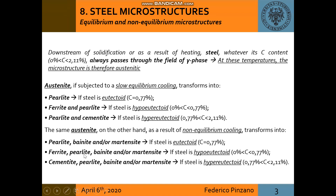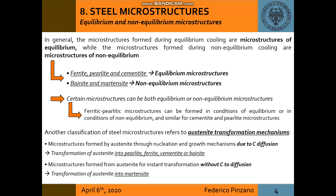It transforms into ferrite, pearlite, bainite and/or martensite if steel is hypo-eutectoid, or into cementite, pearlite, bainite and/or martensite if steel is hyper-eutectoid. It is possible to make a distinction between equilibrium microstructures like ferrite, pearlite and cementite, and non-equilibrium microstructures like bainite and martensite, bearing in mind that certain microstructures can be both equilibrium or not. Steel microstructures can also be divided into those formed from austenite through nucleation and growth due to carbon diffusion, or without carbon diffusion.